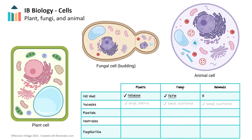All three cell types contain vacuoles; however, their size and function differ. Plants have a large central vacuole whose primary function is to store water, waste products, and provide structural support. If you've ever noticed a house plant that's droopy because it hasn't been watered, its vacuoles have lost some of their water content and turgor, causing the plant to droop. Fungal vacuoles vary depending on the species and stages of growth, ranging in function from storage, digestion, and osmotic balance. Animal cell vacuoles are small and scattered throughout the cytoplasm, usually involved in storage and transport.